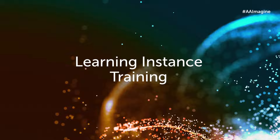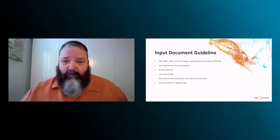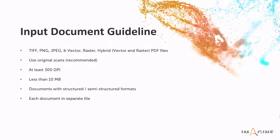Next, I want to go through how this starts — how we begin an IQBot process by going through what we call a training learning instance. First, we need to have good quality documents in a valid image format. It could be vector, raster, or a combination — TIFF, PNG, JPEG, vector are all supported image formats. We also support regular vector or raster PDF files, or even plain text PDF files. It's best to use original scans rather than scans of scans, and to scan at 300 DPI. Documents should be less than 10 megabytes, have a fairly structured or semi-structured format, and each document should be in a separate file.